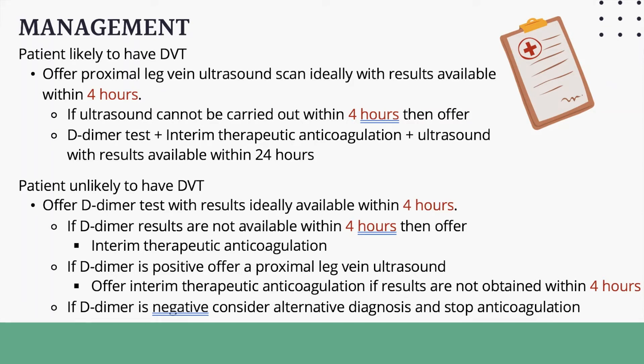Moving on to management of DVT in line with NICE 2020 guidance. DVT falls under what is known as VTE — a clot developing in the deep veins — and anticoagulants are prescribed to prevent propagation of the clot. For patients with a score of 2 or more, offer a proximal leg vein ultrasound scan aiming for results within 4 hours. If results cannot be given within 4 hours, patients are then given a D-dimer test, interim therapeutic anticoagulation, and another ultrasound aiming for results within 24 hours.